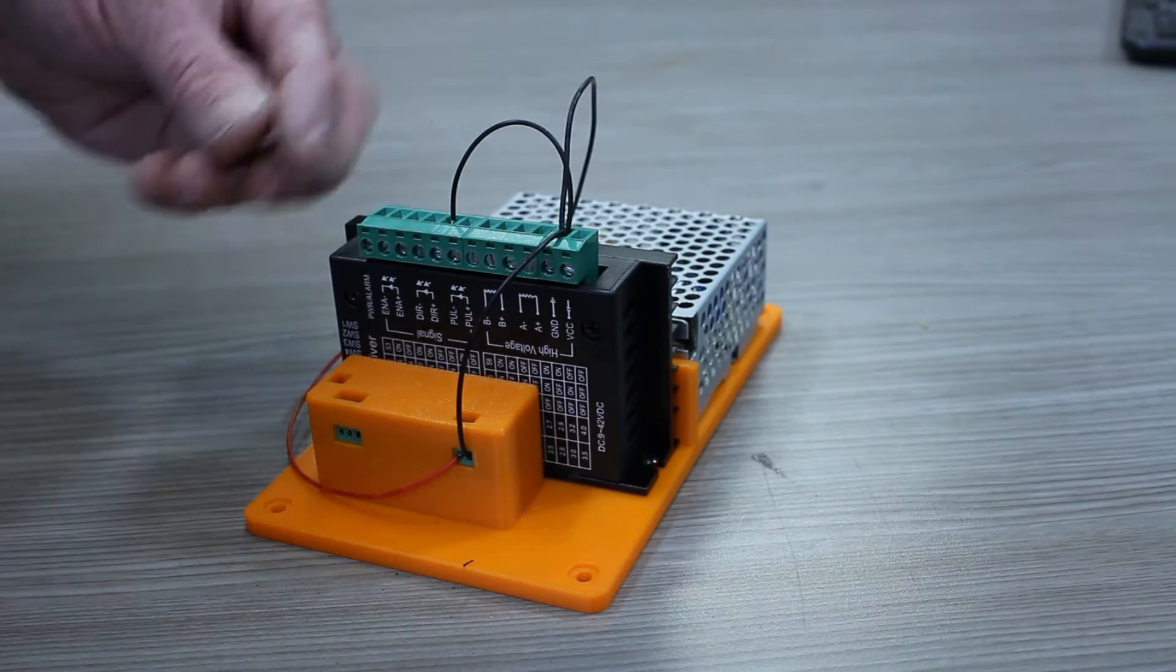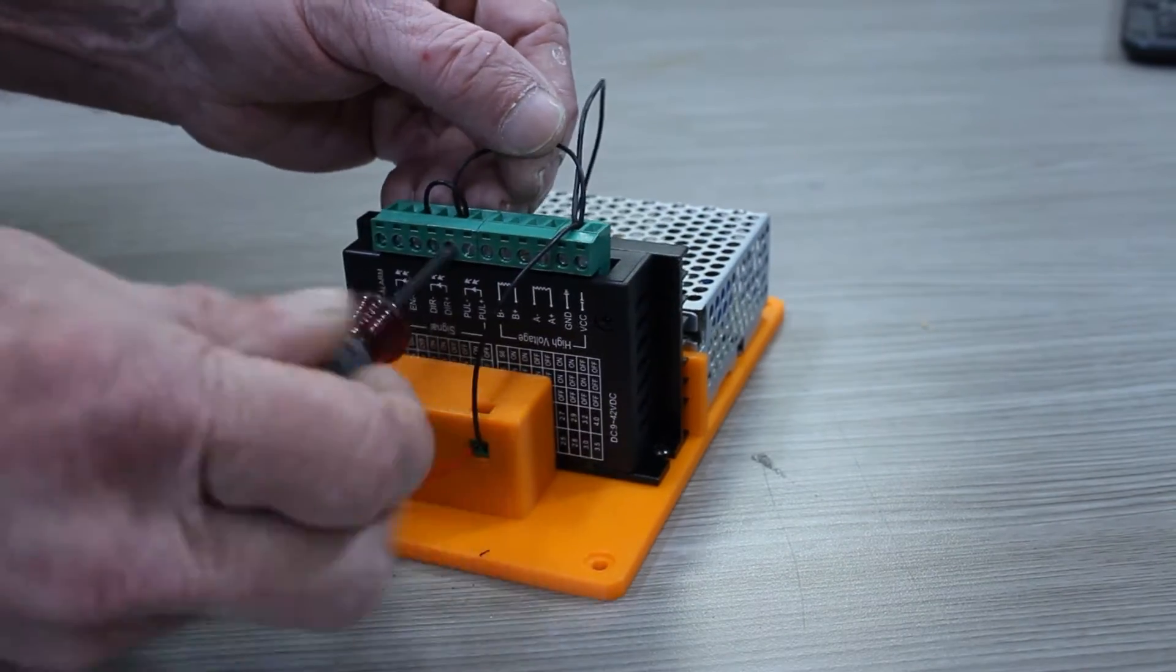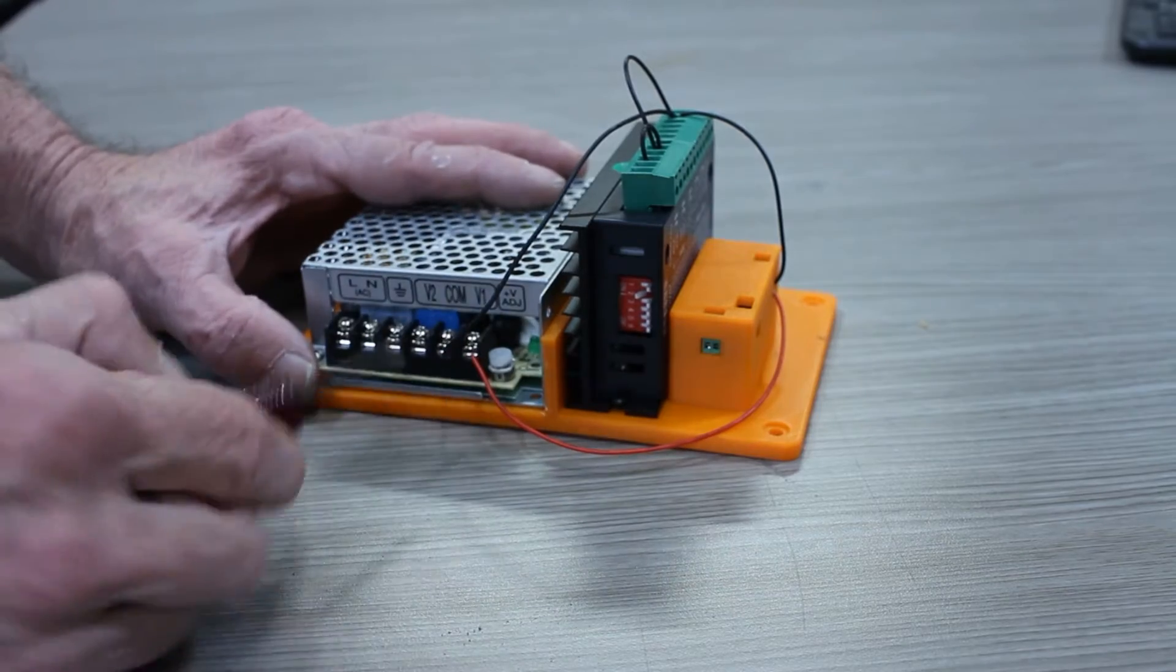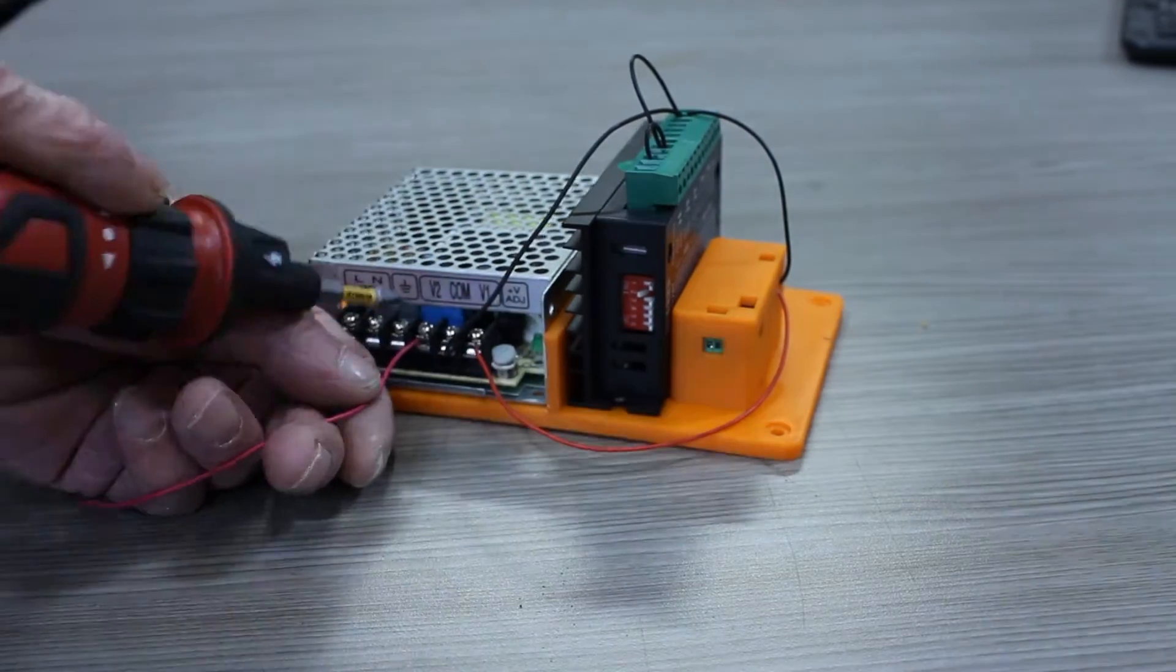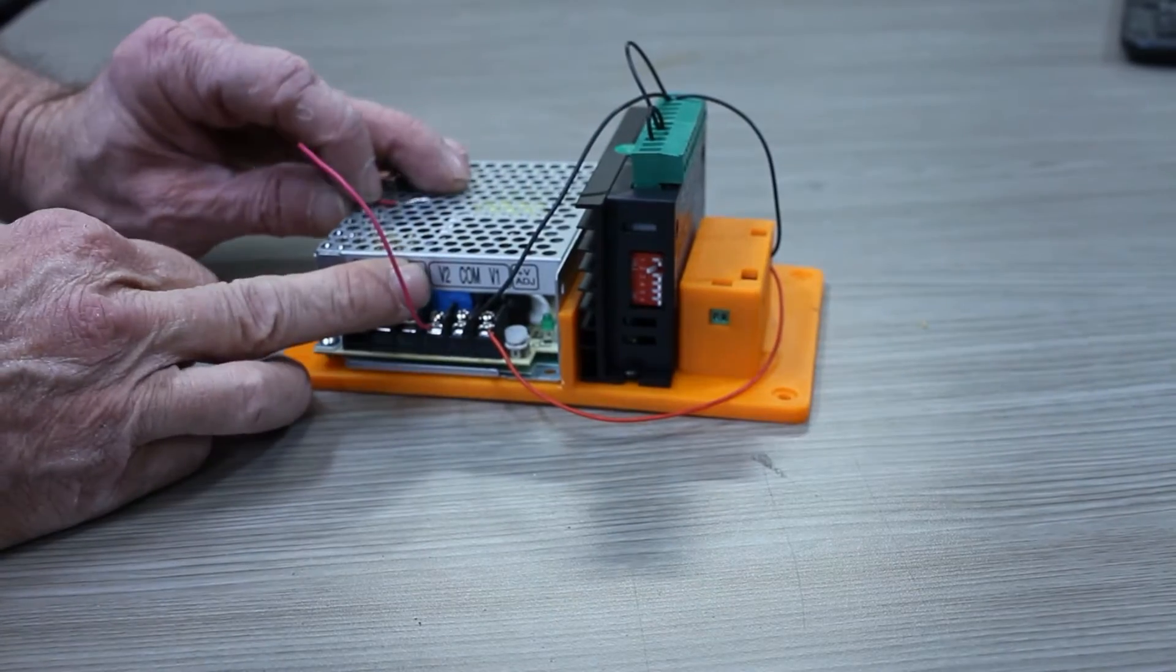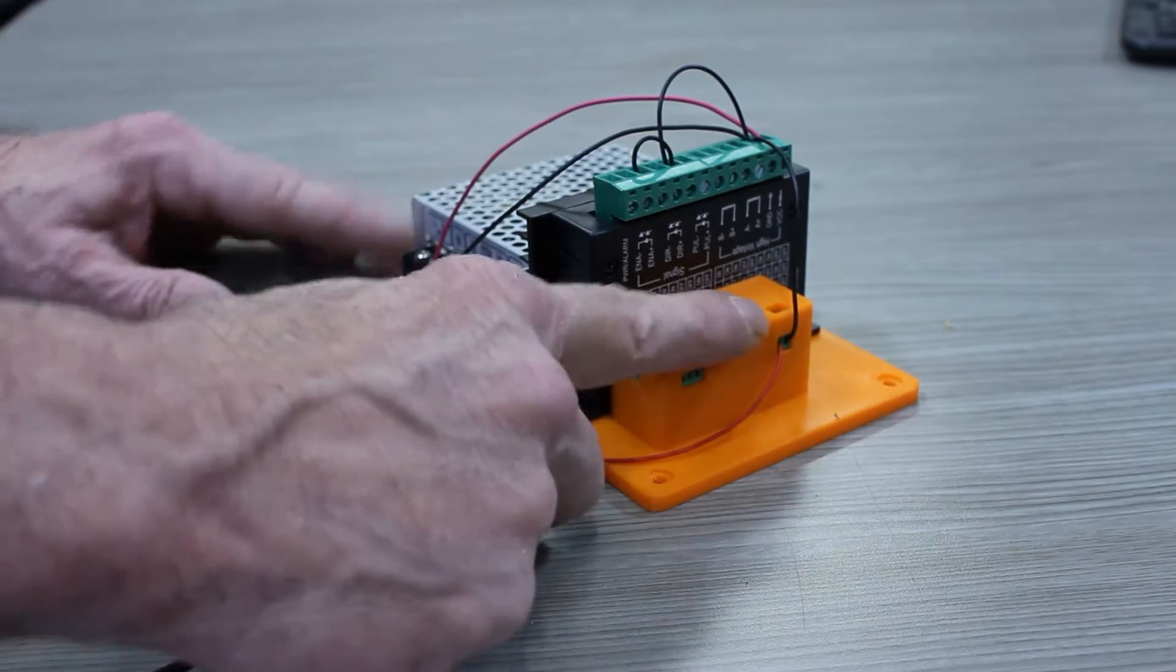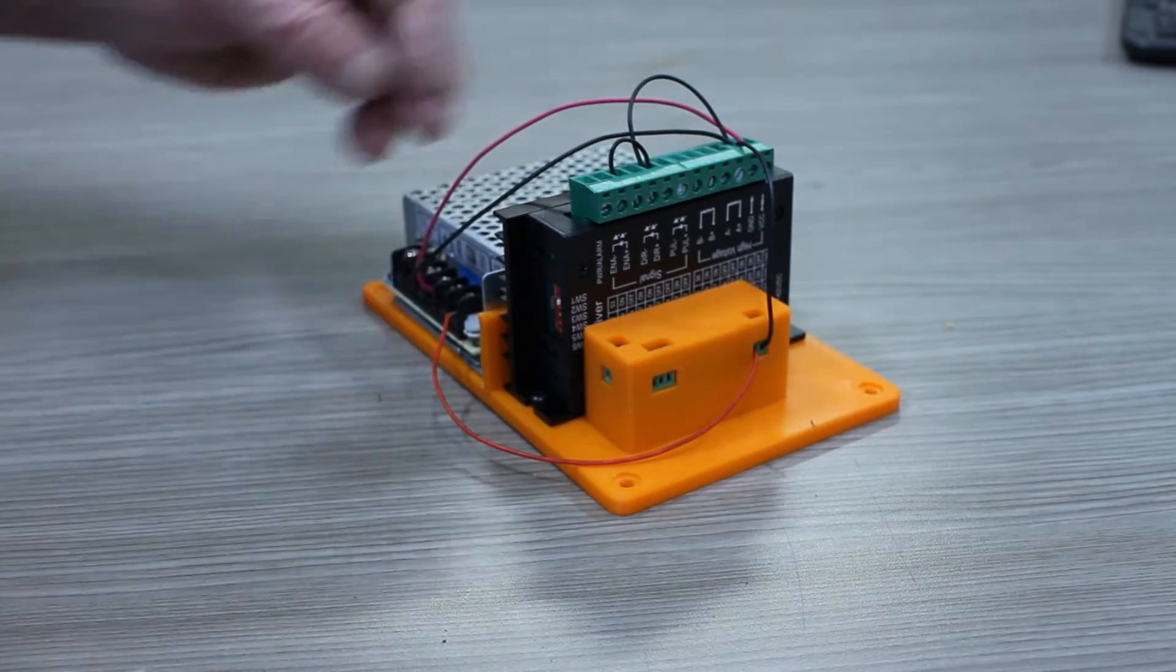And then we've got one little jumper. We're going to jump from pulse negative to direction negative. Then we're going to take this and run it to the common between V1 and V2. We're going to grab this wire. We're going to wire that to the 24 volt side, which is V2 is 24 volts. V1 is five volts. So now we've got our five volts wired to the controller, 24 volts to the stepper driver, and we've shared these commons.